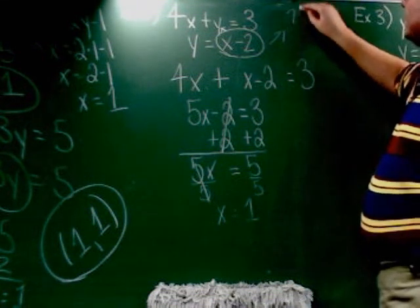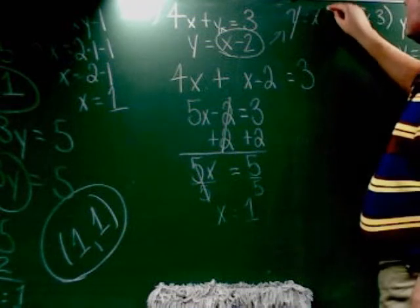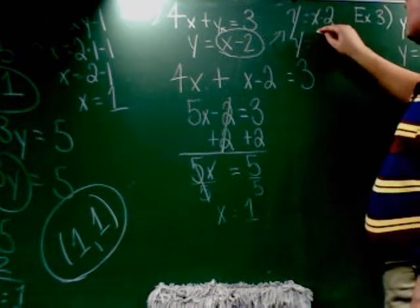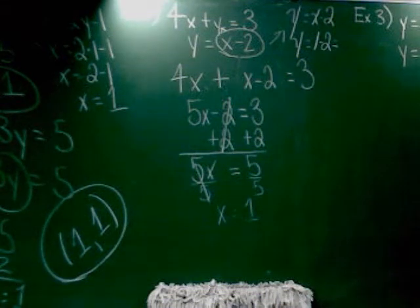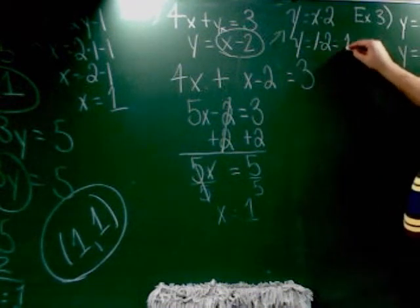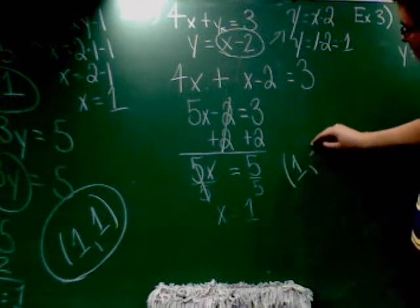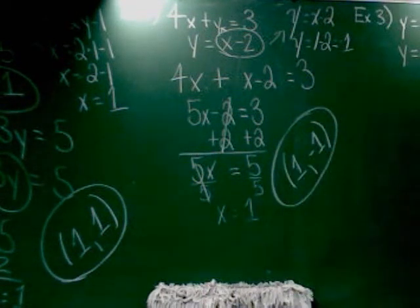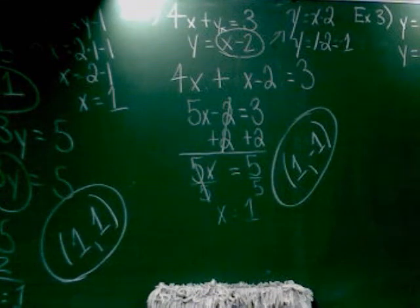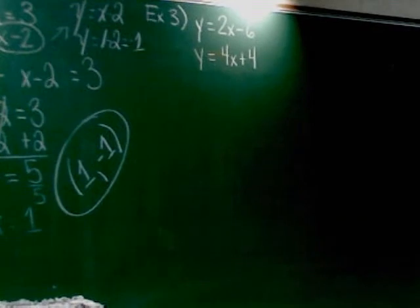Alright. So, I'm going to change x into 1. So, y equals 1 minus 2, which is? Negative 1. So, the answer here is 1, negative 1. As you've probably guessed by now, I can't make this homework assignment too terribly long, because these problems take a while.